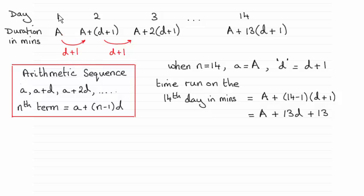So on the first day she ran for a minutes. Second day we add a further d plus 1 on to the previous time. So that's a plus d plus 1. The third day we add another d plus 1 on to this time. So you can see it's a plus 2 lots of d plus 1.